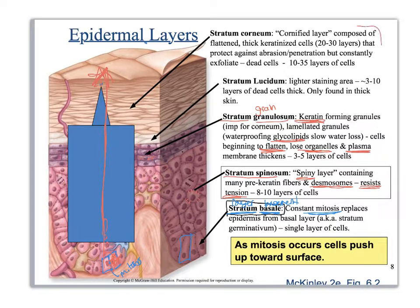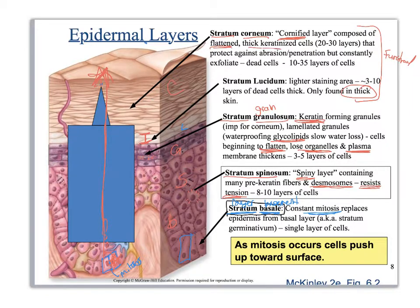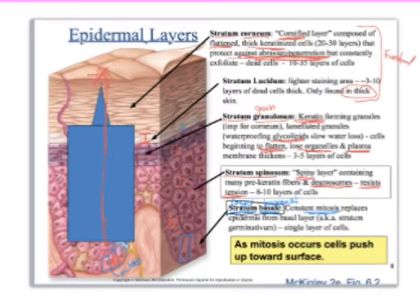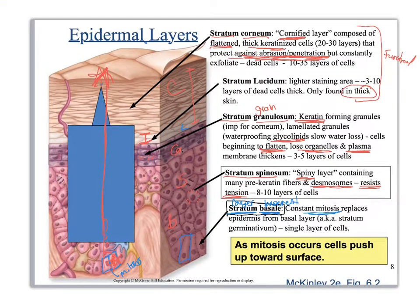Above the granulosum is the functional layer. This clear area that doesn't absorb stain well is the stratum lucidum — you only have this in thick skin, not thin skin. Then you've got the stratum corneum: 'corneum' refers to cornified, like a horn. These are really flattened, heavily keratinized, dead cells that resist abrasion and penetration. Those are the layers of the epidermis.